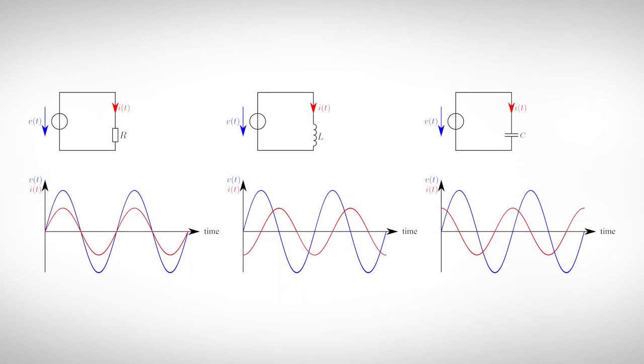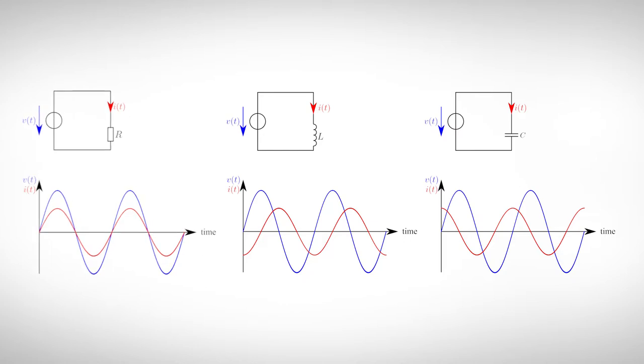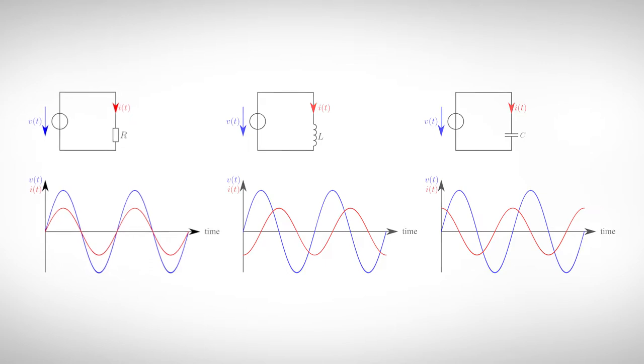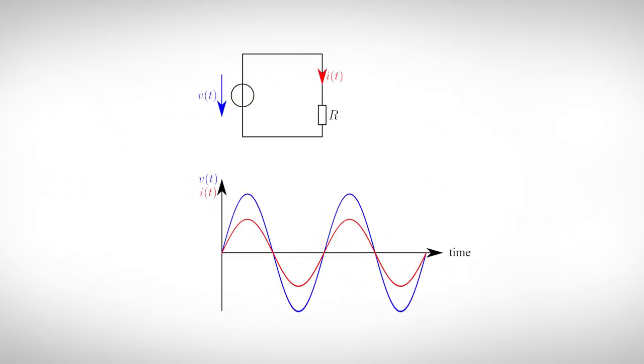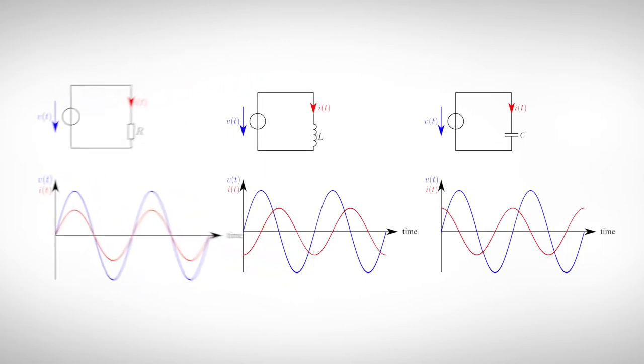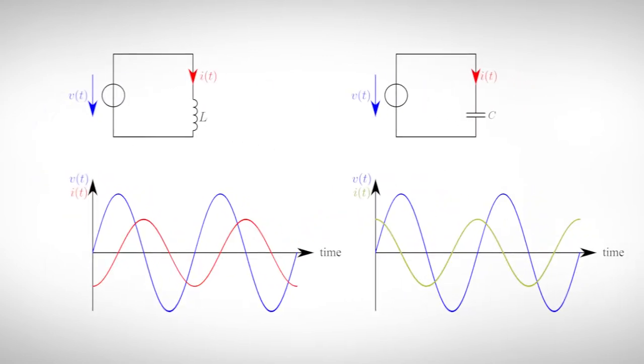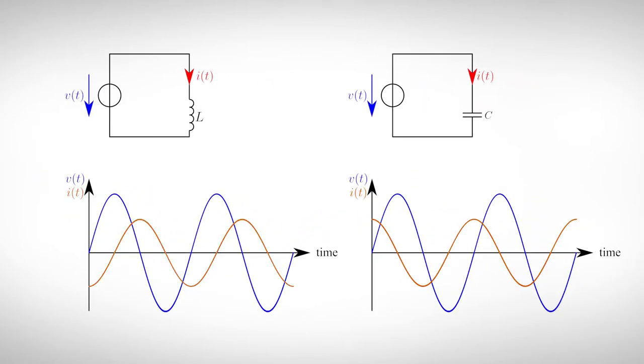Our well-known passive linear elements - resistor, inductor and capacitor - have a specific AC behavior. If an alternating sine voltage is applied to a resistor, a current flows through it which is in phase to the applied voltage. With an inductor or a capacitor, the current is 90 degrees out of phase. In case of the capacitor, the current is leading; for the inductor it is lagging.